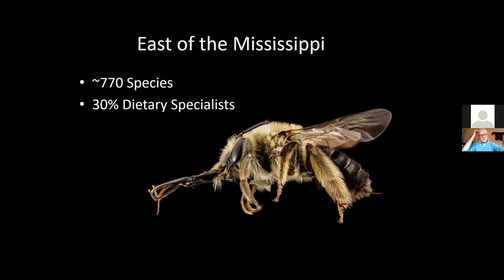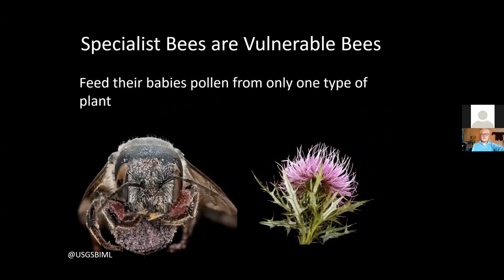If you look at straight counts and ask where are the common species, the common species are bees that have a greater range of floral preferences. Often they're semi-social — mom and daughters kind of get together and build a warren of nests. As you get more specialized, you just become less common because you're completely dependent on only one portion of the environment.